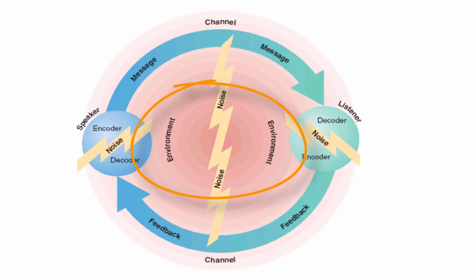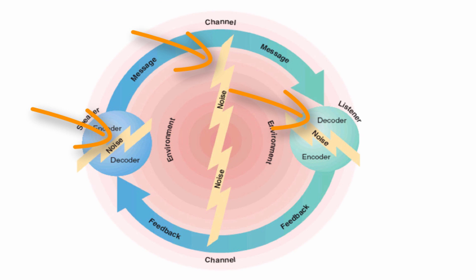In the center area of the model we see the environment — a very detailed description of the speaking situation. That includes the physical environment, the time of day, the type of occasion, and whether it's formal or informal. You really start to analyze the situation where the communication is taking place. And lastly we have three lightning bolts to represent the three types of noise, showing how difficult our job is as a communicator.